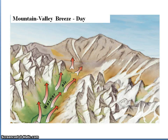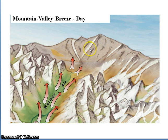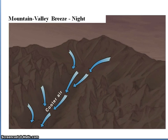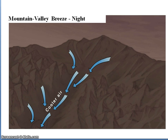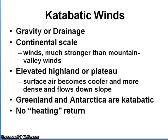The same process happens locally in mountain areas. In mountain-valley breezes during the day, the valley areas heat up much faster than the high-altitude mountains. As those air masses heat up, air rushes up slope. Then at night, the mountain cools, the air condenses and drains back down into the valley.